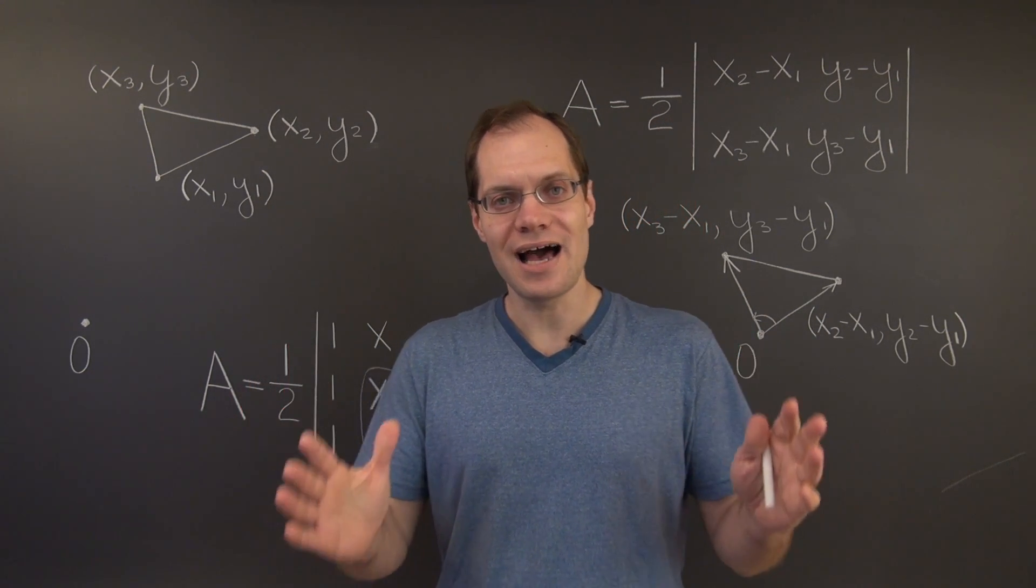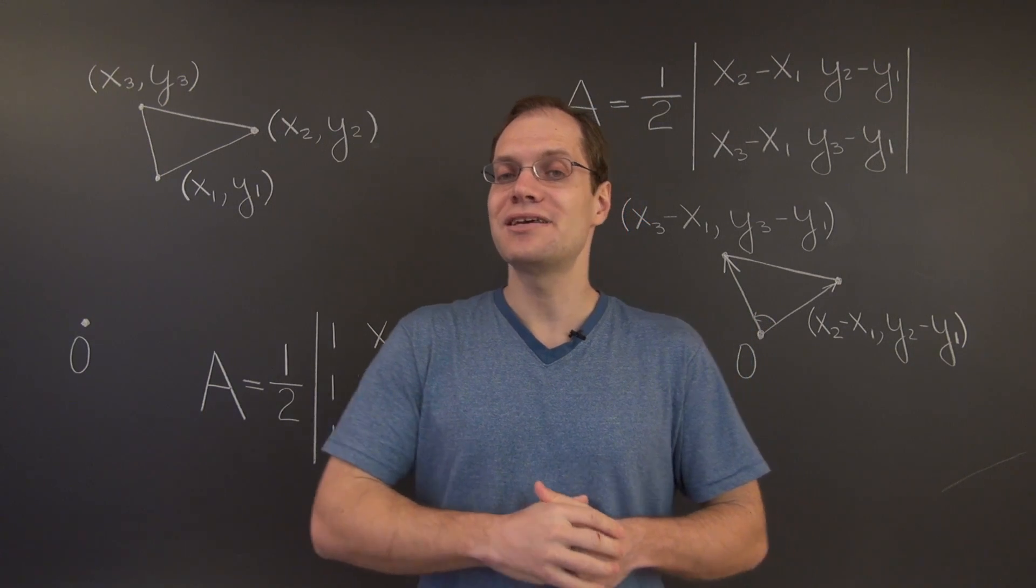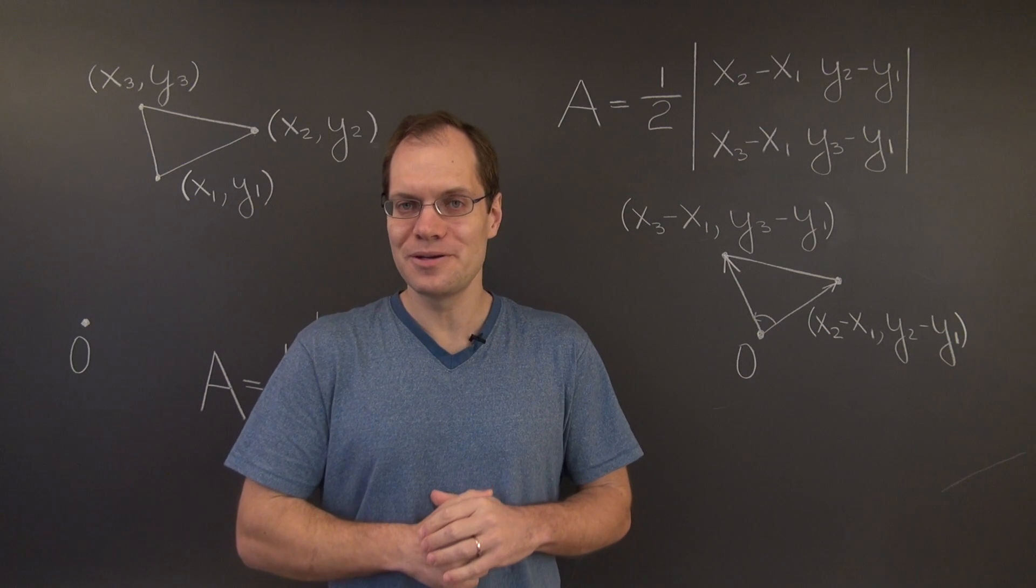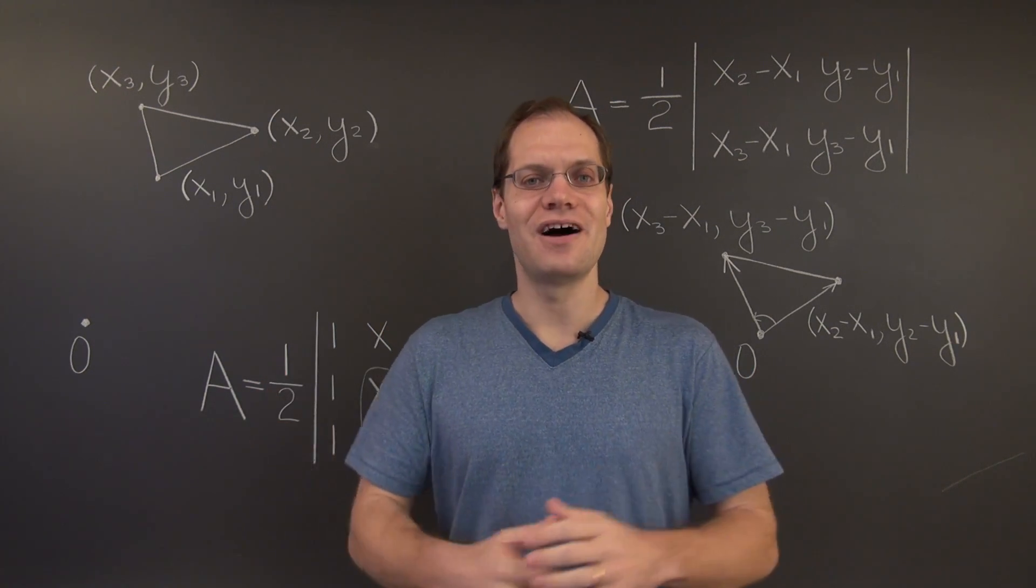Except remember to put 1 sixth in front of that determinant instead of 1 half. And that will be the side area of the tetrahedron. Okay? So that's yet another application of determinants to areas and volumes.